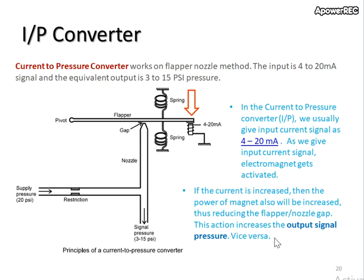In this slide, we will look into the basic configuration of current to pressure converter by using flapper nozzle method. The input is 4 to 20 milliamp signal.